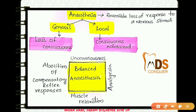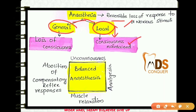The term anesthesia means a reversible loss of response to a noxious stimuli. There are two types of anesthesia: local anesthesia, which is regularly used in our dental clinics and in which consciousness is maintained, and general anesthesia, where we see the loss of consciousness.